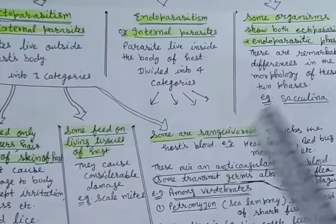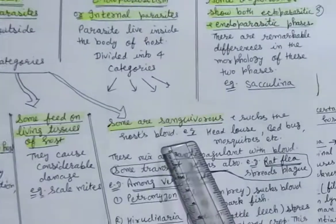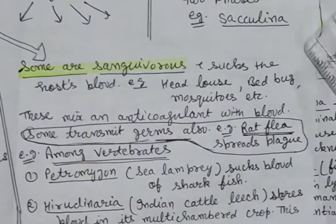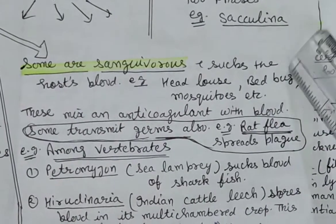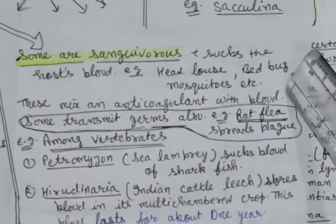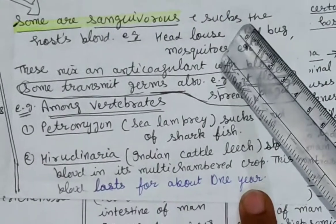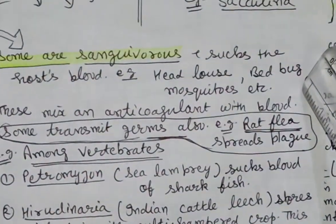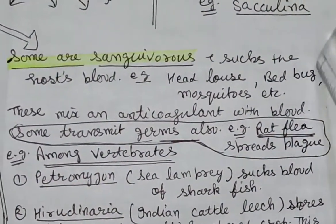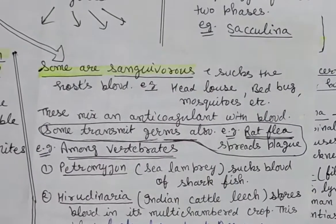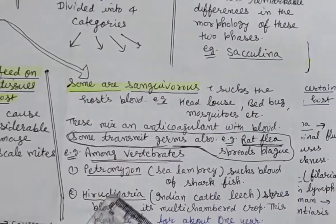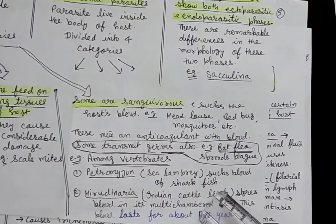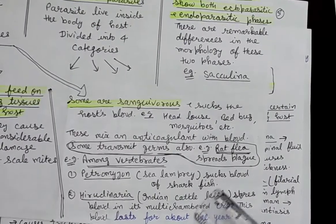Some parasites are sanguivorous in nature, meaning they suck the host's blood — for example, head louse, bed bug, and mosquitoes. These organisms mix an anticoagulant into the host's blood, which allows them to easily suck it. These are invertebrates with sanguivorous nature. Moving towards vertebrates, some vertebrates are also sanguivorous, such as Petromyzon, whose common name is sea lamprey — it sucks the blood of sharks.